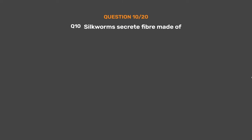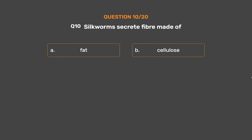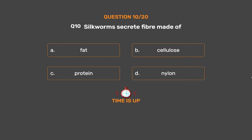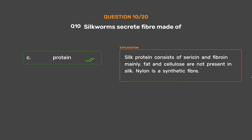Question No. 10. Silkworms secrete fiber made of — Option A: Fat, Option B: Cellulose, Option C: Protein, Option D: Nylon. The correct answer is Option C: Protein. Silk protein consists mainly of sericin and fibroin. Fat and cellulose are not present in silk. Nylon is a synthetic fiber.